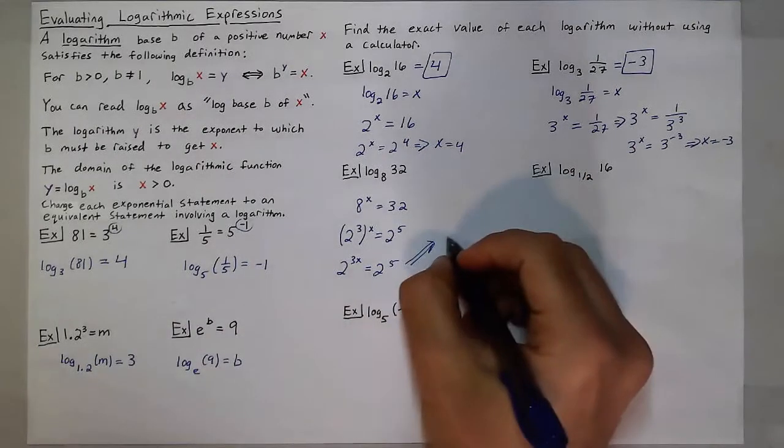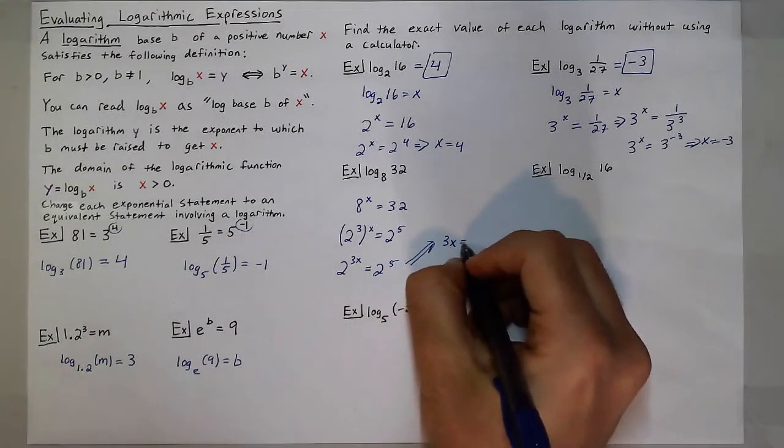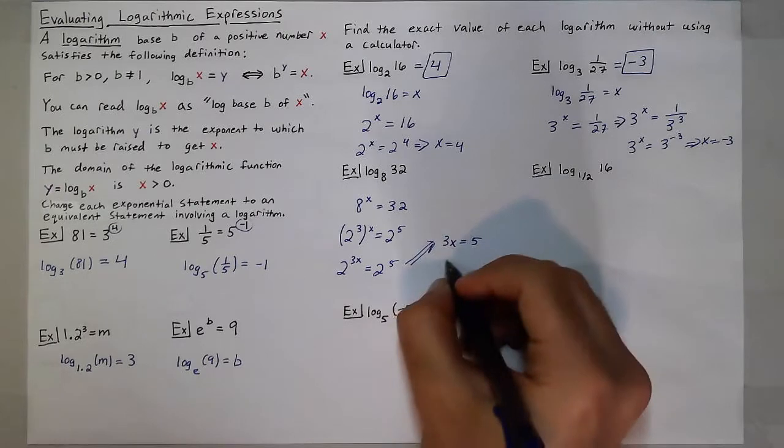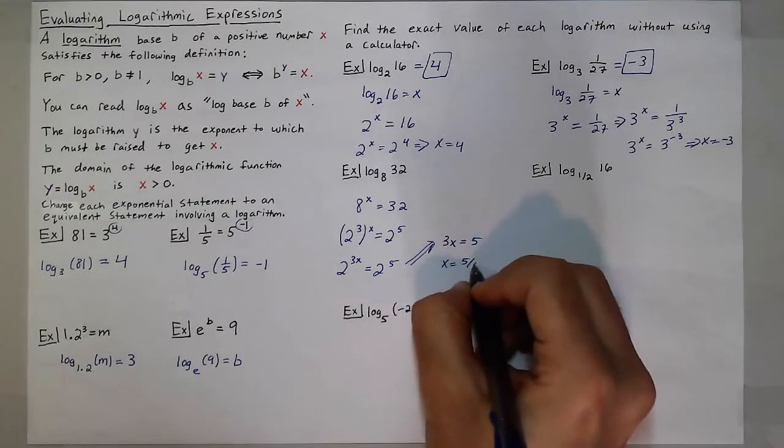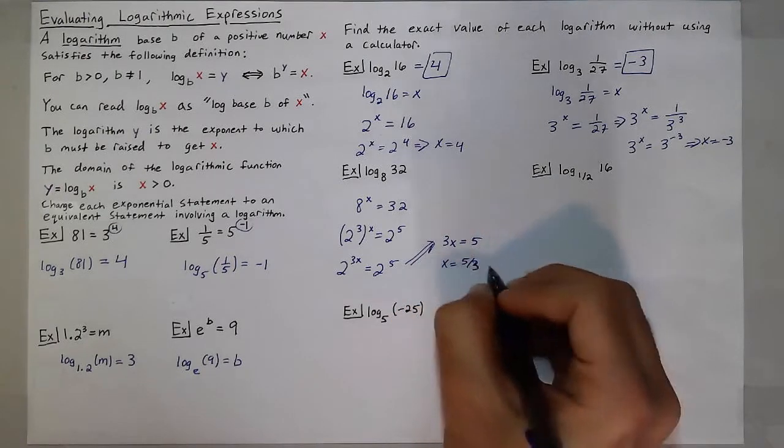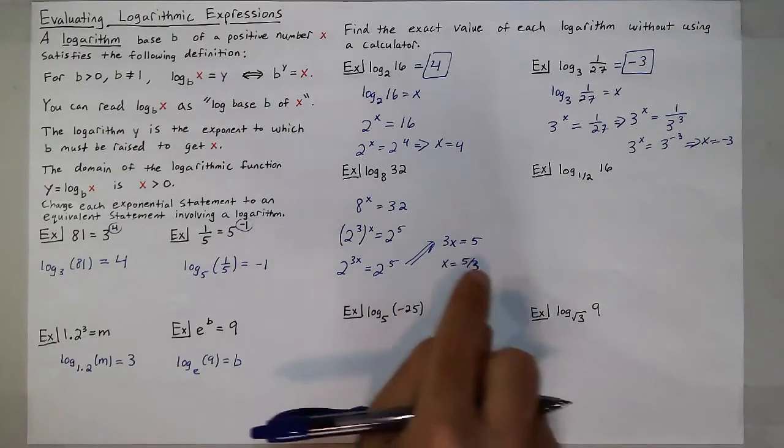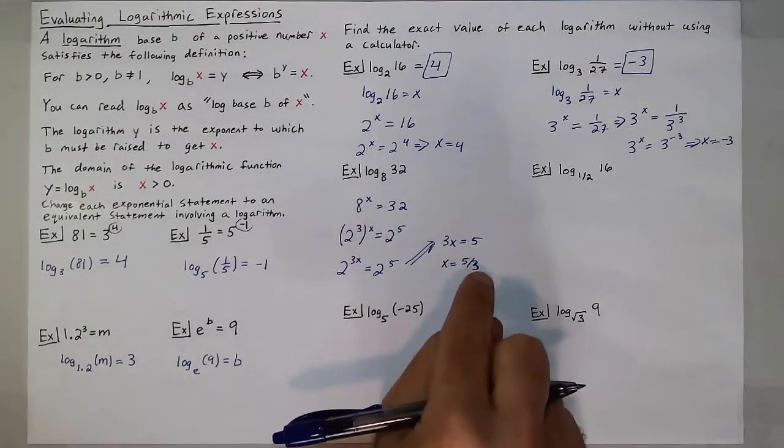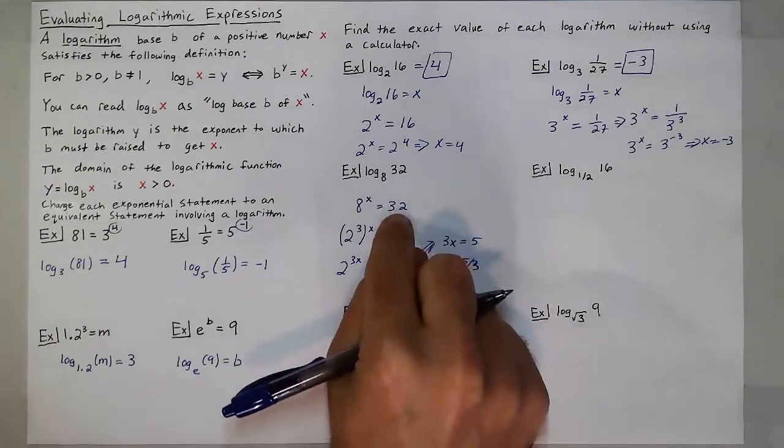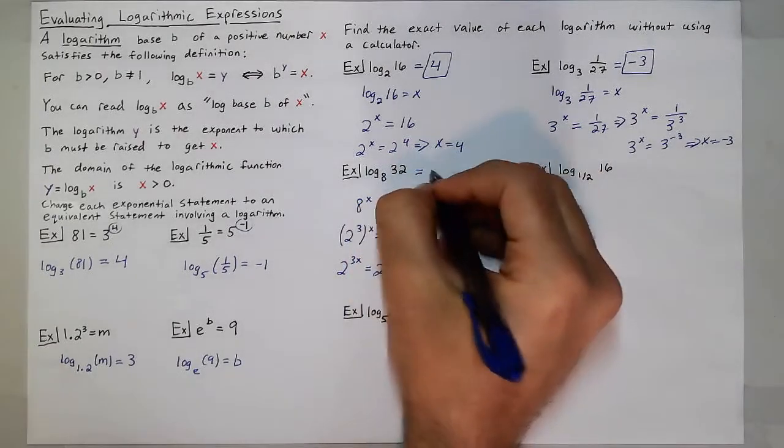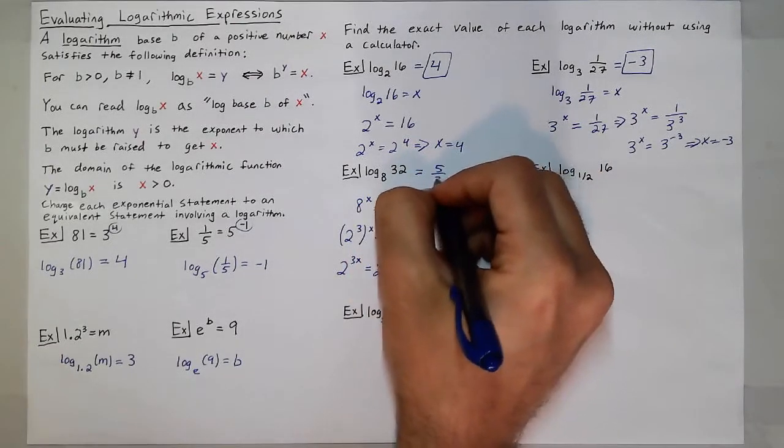So that power I'm looking for when I solve this equation is x is equal to 5/3, which means that x needs to be raised to that 5/3 power to get 32. So log base 8 of 32 is 5/3.